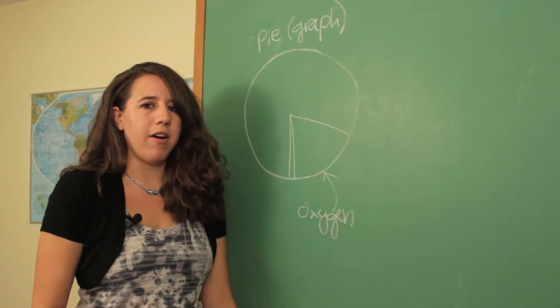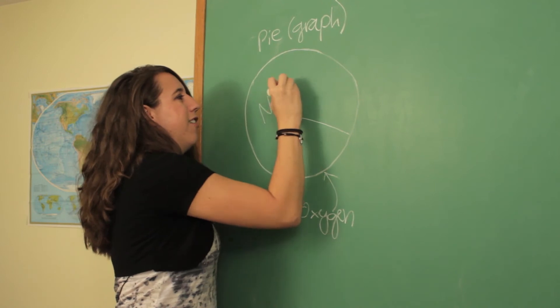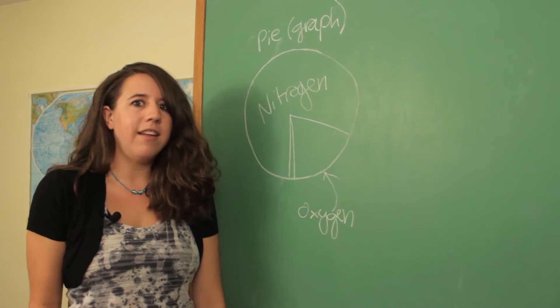So what is all of the other stuff that we're actually breathing in? Turns out it is nitrogen, a completely inert gas that doesn't help us or hurt us. It just kind of takes up space.